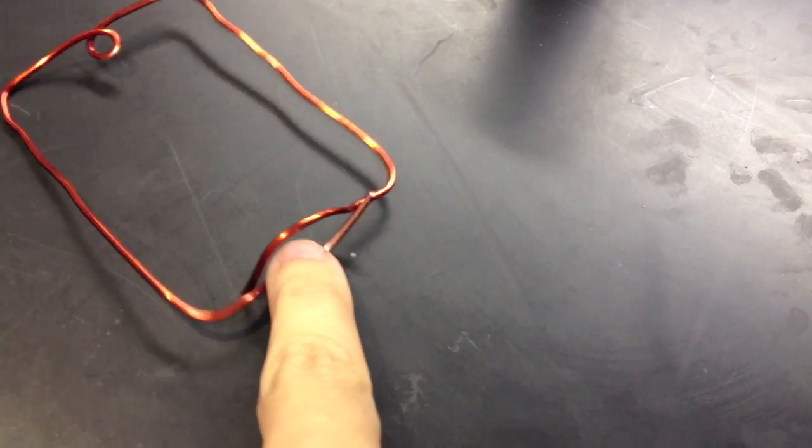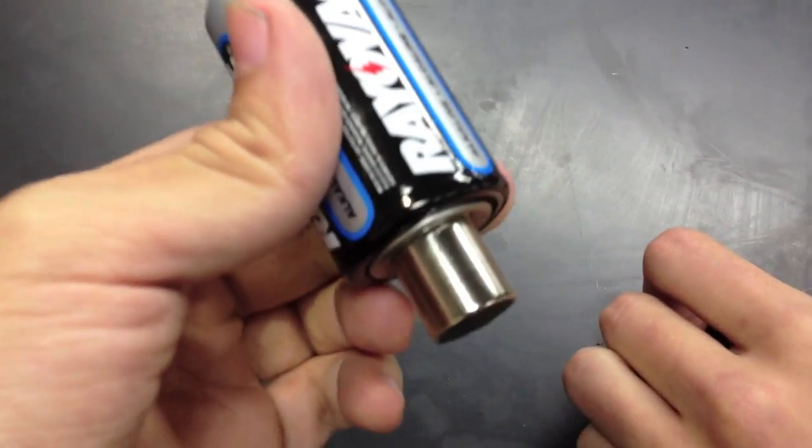So we just made a unipolar motor. We have some wire which we stripped off the insulator over here and over here so it can make contact with the battery. We have a battery and a magnet at the bottom.